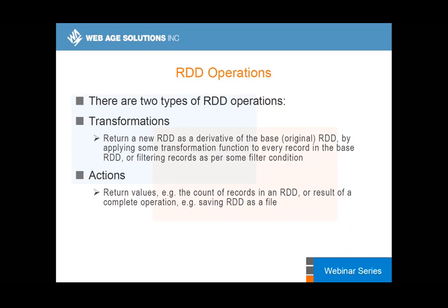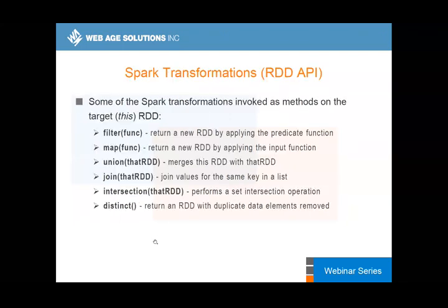An action would cause all transformations to be materialized — the file will be loaded because loading is a lazy operation as well. So if you really want to check if you can load the file, do a 'first' or 'take one' type of operation on the RDD so you can at least get something to confirm the file can be loaded. Actions trigger the whole thing into action.